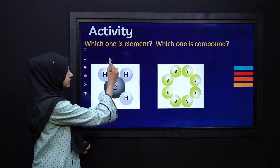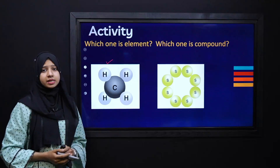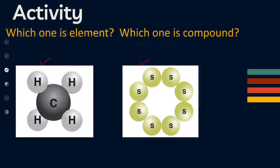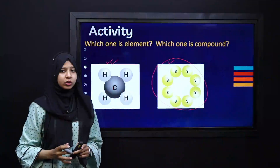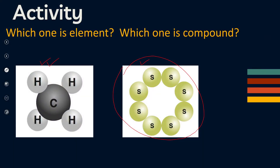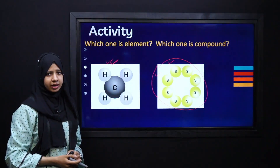Next activity: which one is the element and which one is the compound from the given two pictures? This one is the element, whereas this one is the compound. Can you tell me the reason? This one has the same type of atoms, while this one has a combination of different types of atoms.